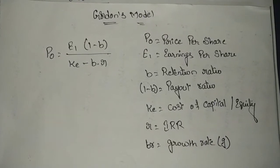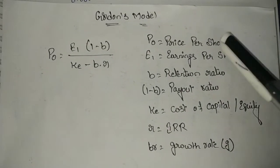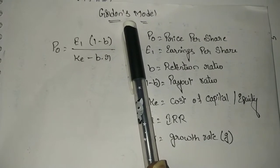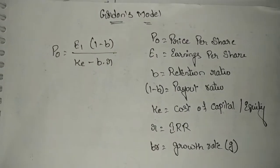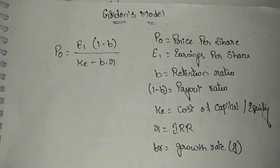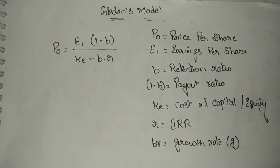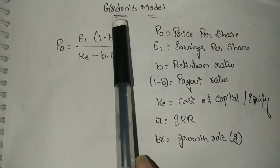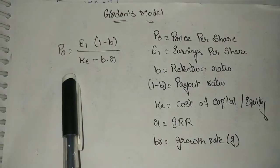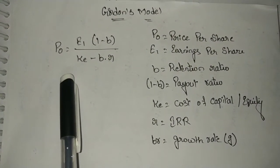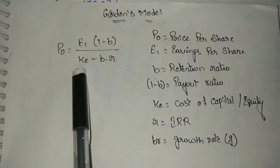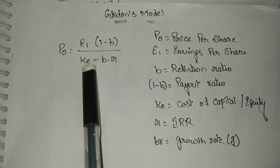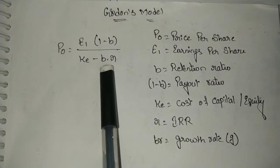Welcome back. Here we are going to discuss Gordon's Model, which is the second relevance theory of dividend decisions. In the last video we saw Walter's Model, the first relevance theory of dividends. The formula used for calculating price per share using Gordon's Model is: P0 = E1 × (1 - b) / (ke - b × r).